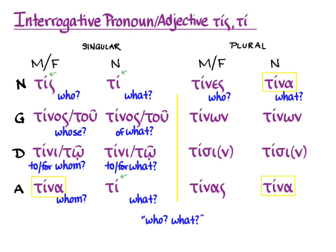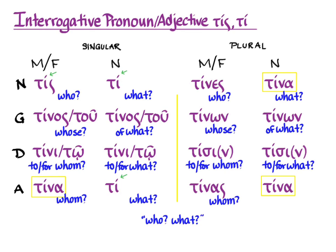English doesn't have separate plural forms. So in the nominative plural, we get 'who' and 'what.' In the genitive, 'whose' and 'of what.' In the dative plural, 'to or for whom' and 'to or for what.' And in the accusative, 'whom' or 'what.'